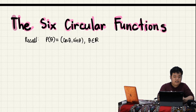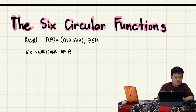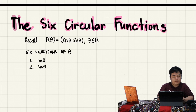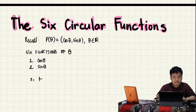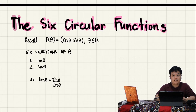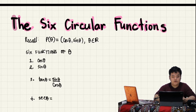These are what we call the six circular functions of theta. The first two we already know: they are cosine theta and sine theta. The next one is tangent theta, which is sine of theta divided by cosine of theta. And we have secant theta, which is the reciprocal of cosine — that is one over cosine of theta.